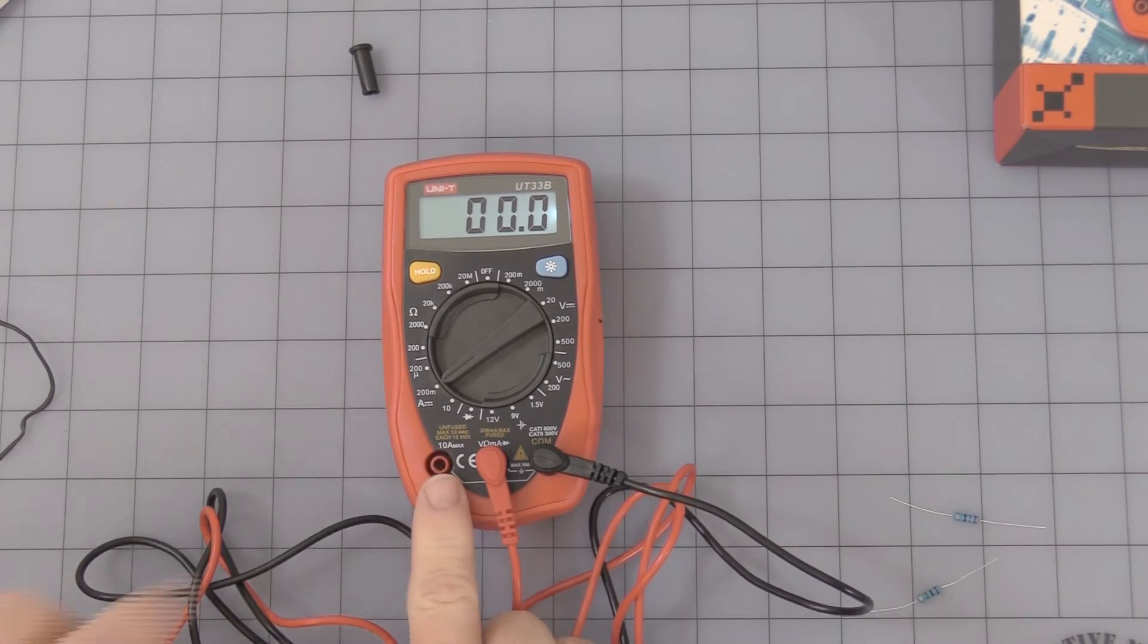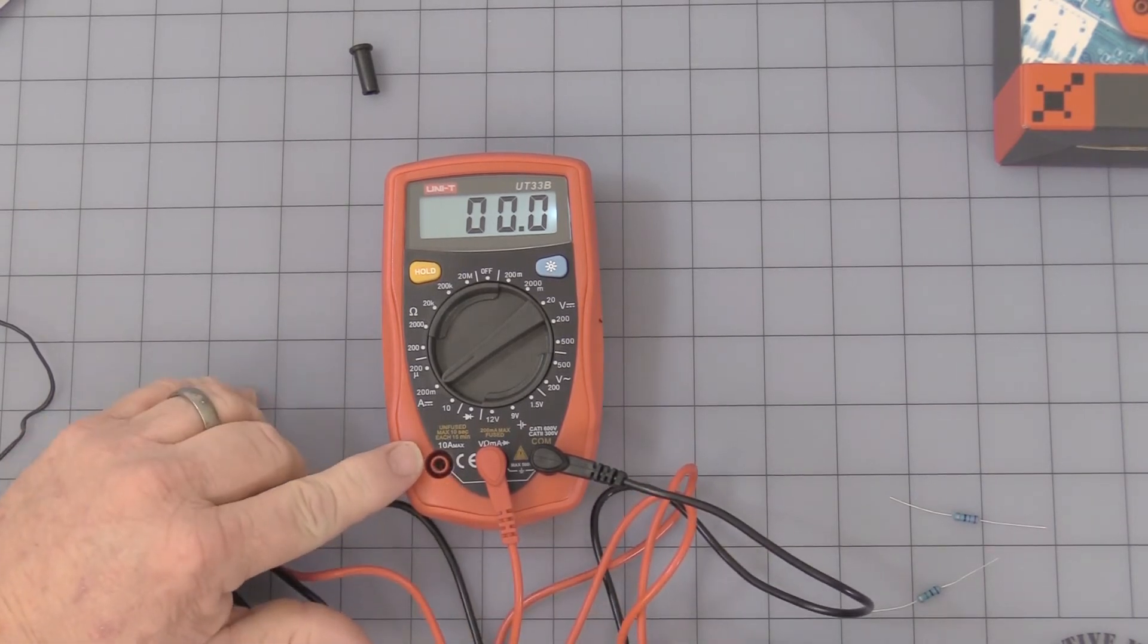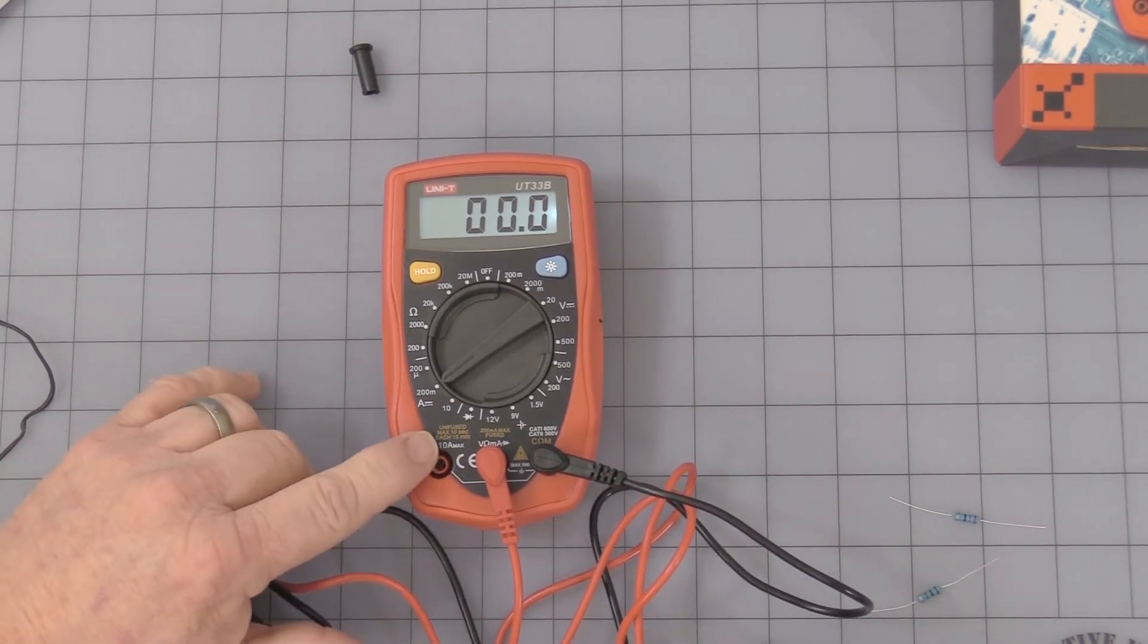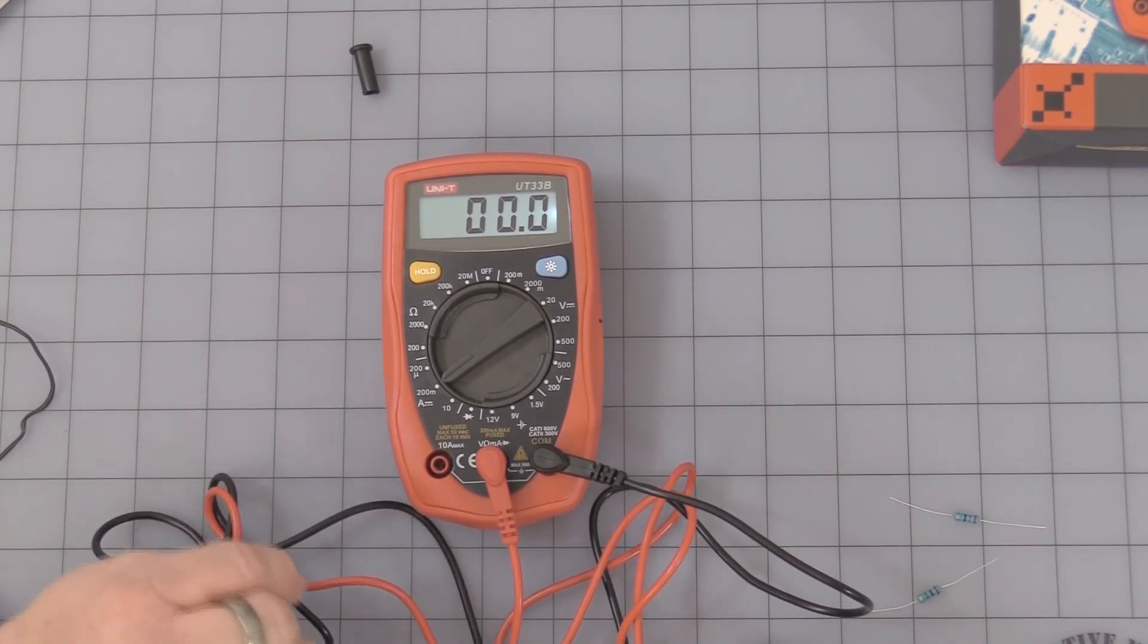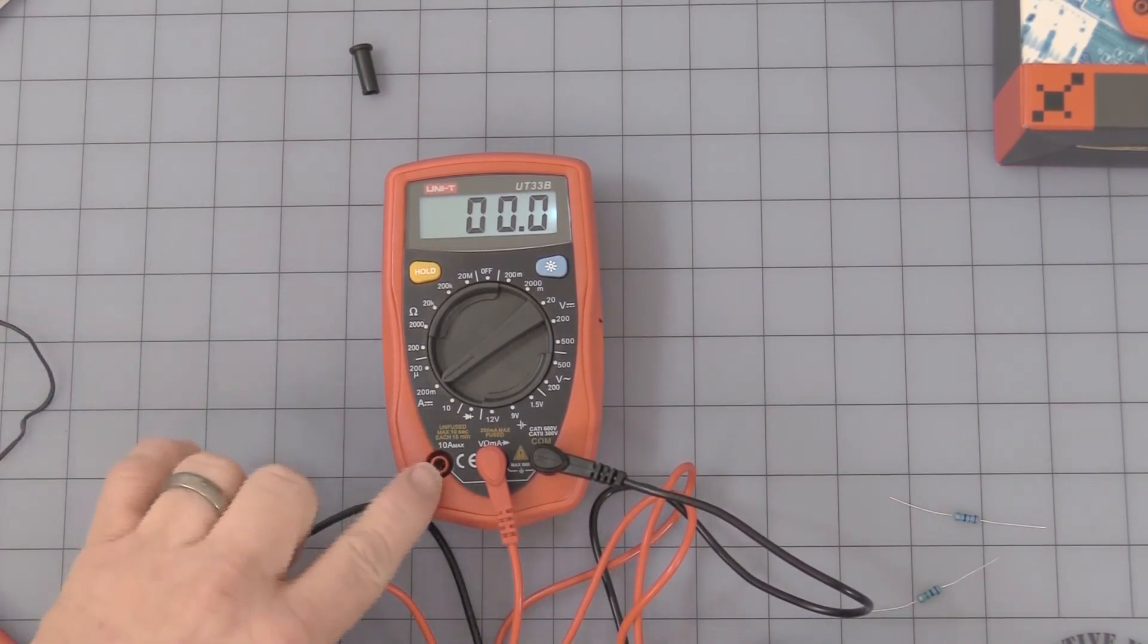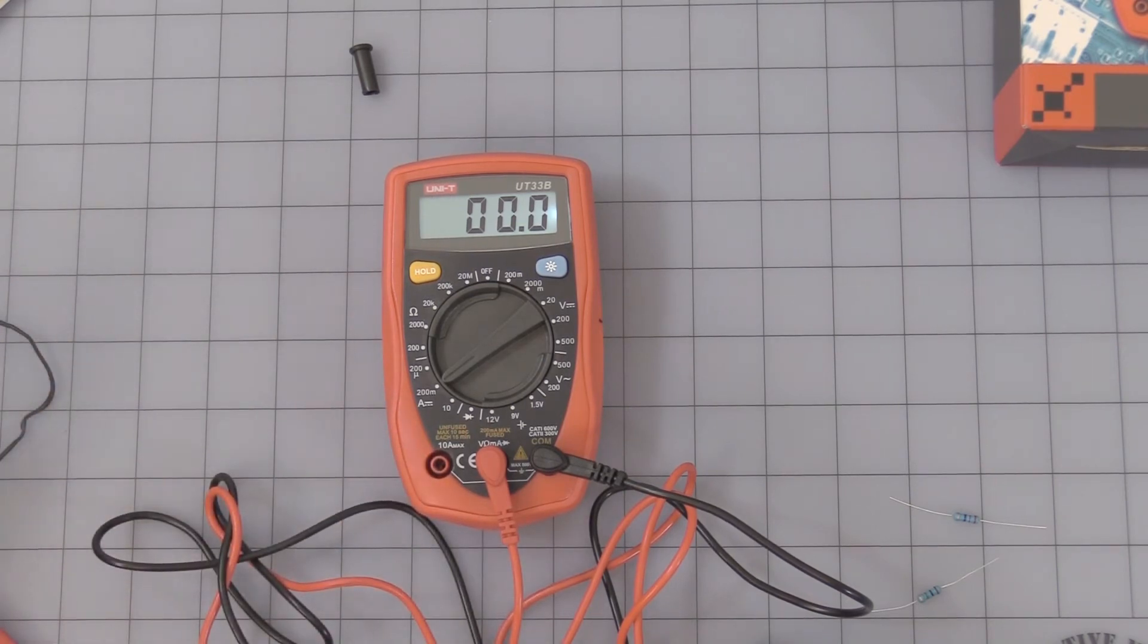Now we get into the 10 amp section. This is what I've always warned people, and they actually printed it on the face of the meter. It's unfused. It's for 10 seconds max each 15 minutes, which means you would have to let it cool off if you're going to run it near 10 amps for more than 10 seconds.